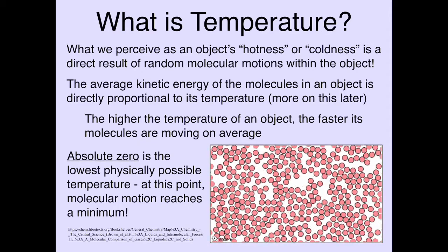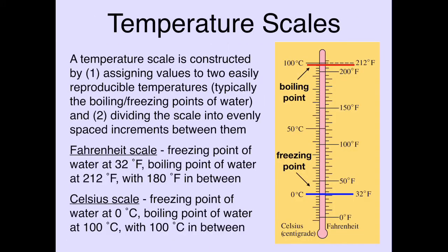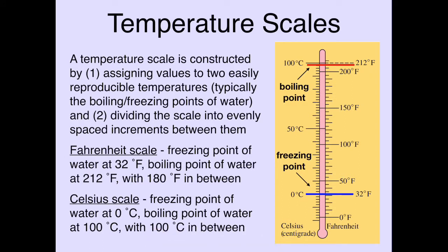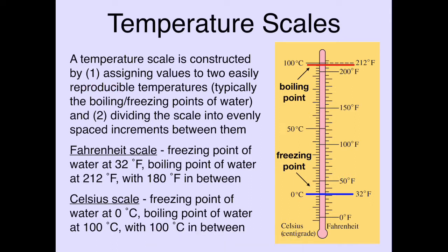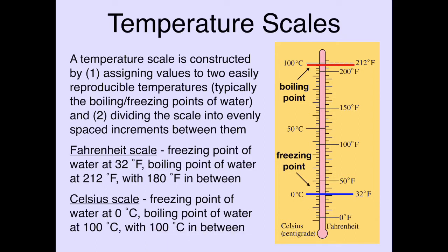So that's what temperature is in physics terms. Now, how do we measure temperature? We need some kind of temperature scale. There are different temperature scales, like the Celsius and Fahrenheit scales. We construct a scale by first assigning values to two easily reproducible temperatures — typically the boiling point and the freezing point of water. Then in between those two temperatures, we divide the scale into evenly spaced increments.